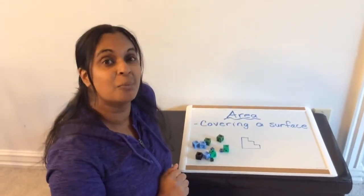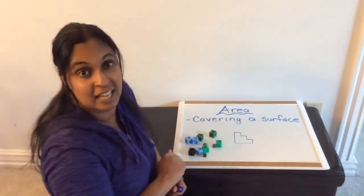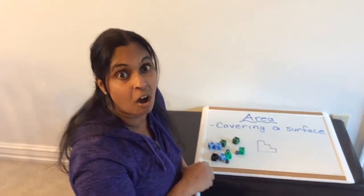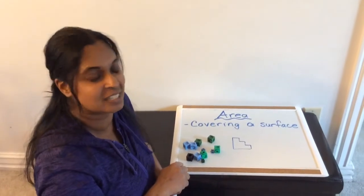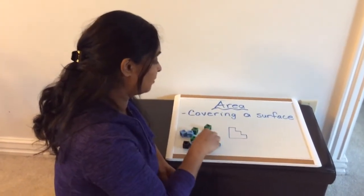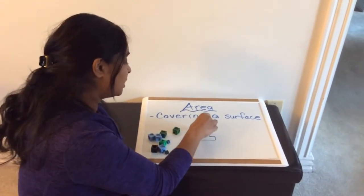Now, the biggest rule when you cover a surface like this to find the area is that your units must all be the same size. So you can see here that I have two different sizes of linking cubes. So if I start to cover this,